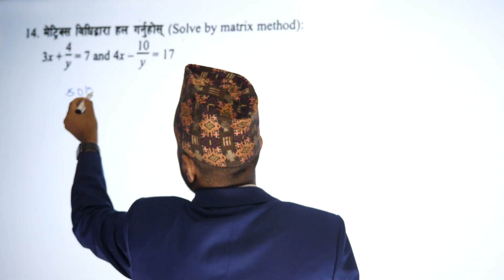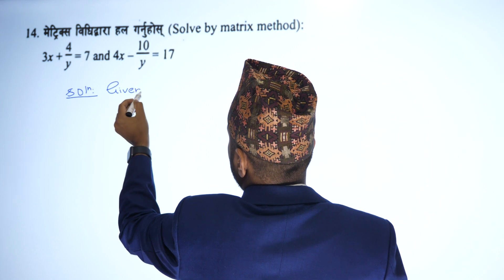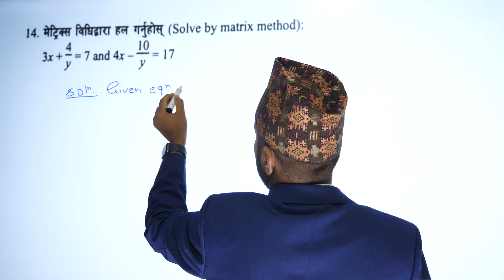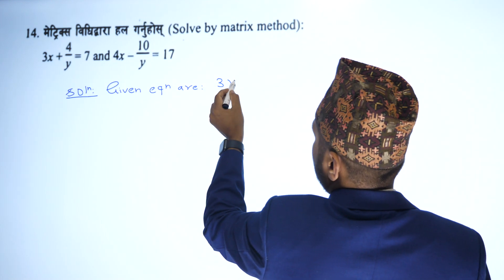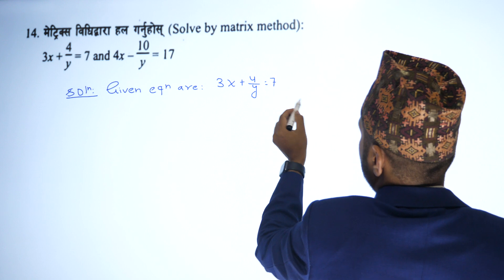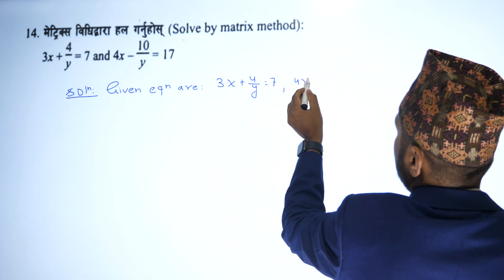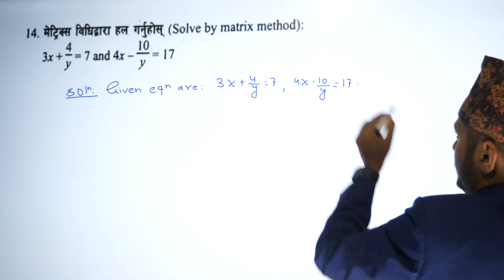Now we use the matrix method of solving the problem. The given equations are: 3x plus 4 by y equals to 7, and 4x minus 10 by y equals to 17.